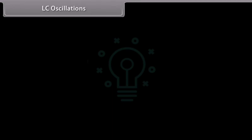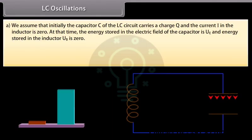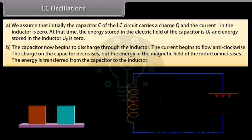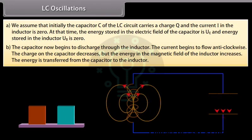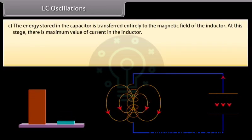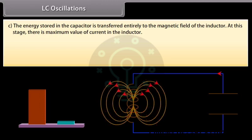LC oscillations. We assume that initially the capacitor C carries a charge Q and the current I in the inductor is 0. The energy stored in the electric field of the capacitor is Ue, and the energy stored in the inductor Ub is 0. The capacitor begins to discharge through the inductor; current flows anti-clockwise. The charge on the capacitor decreases, but the energy in the magnetic field of the inductor increases. Energy is transferred from the capacitor to the inductor until there is maximum current in the inductor.